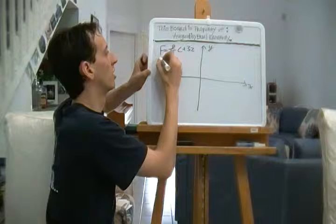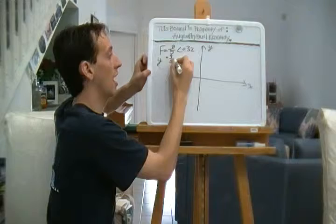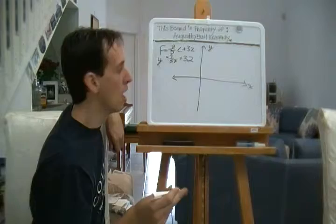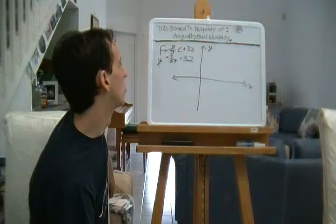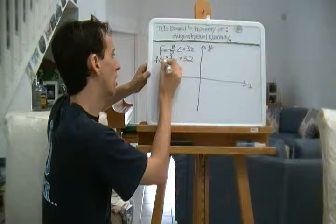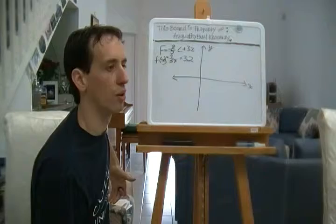In other words, we're going to look at it like this: Y equals 9 fifths X plus 32. Whenever I see a question that uses different variables, I like to bring it back to X and Y if I can because that makes it a little bit easier to look at.